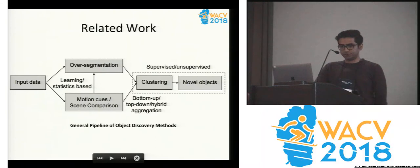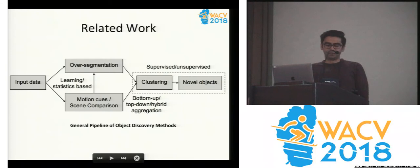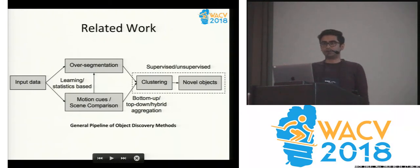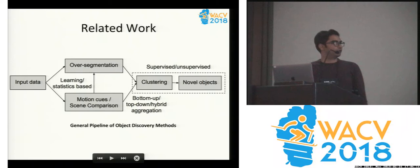The general pipeline for existing work follows a similar pattern. You take the input data, you utilize some kind of external cues, and come up with a segmentation of the data. These are point cloud data, so you come up with super voxels, and then eventually you apply some clustering algorithm to do the object discovery.